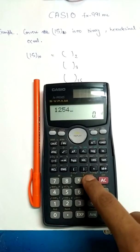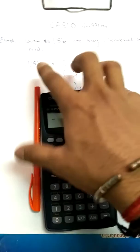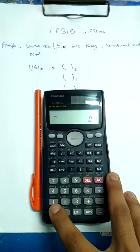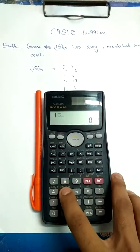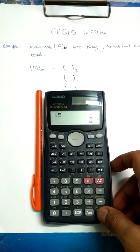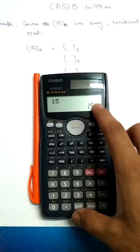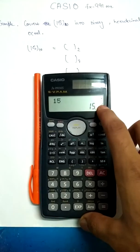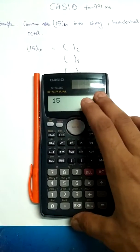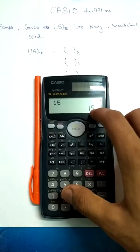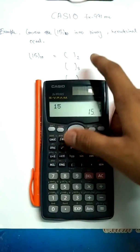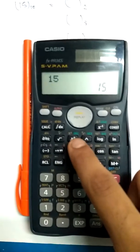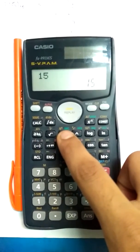I am randomly choosing a number — 15. I have typed 15 and pressed equals, so the calculator now has the decimal value 15. I want to convert this 15, which is in decimal, into binary.